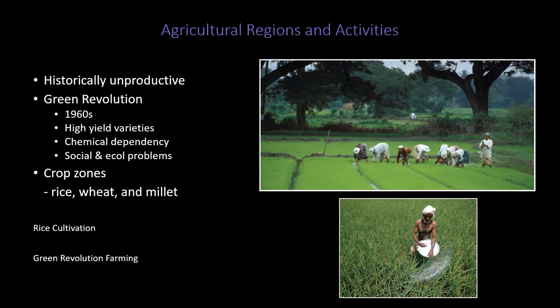While the Green Revolution has been called successful because it increased yields and helped feed the people, the problem is the social and ecological consequences. There are the ecological problems from chemical inputs like fertilizers and pesticides, but also huge social problems. This resulted in one of the worst mass suicide events in human history — over a 15 to 20-year period in the 90s to early 2000s, thousands and thousands of farmers were so in debt that they committed suicide.